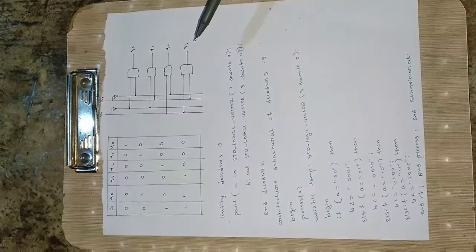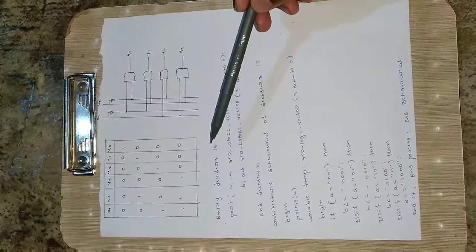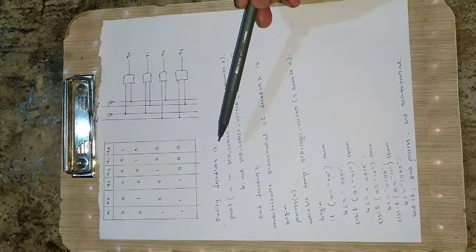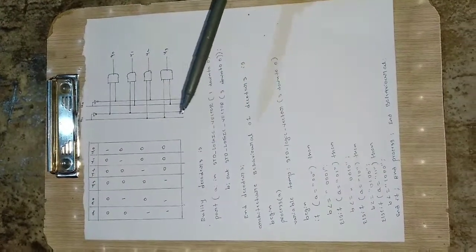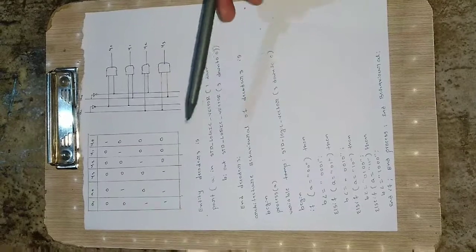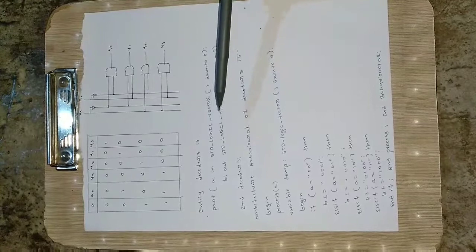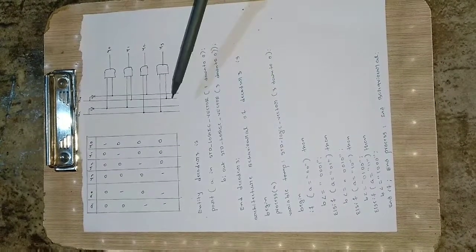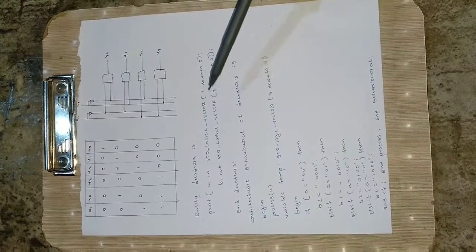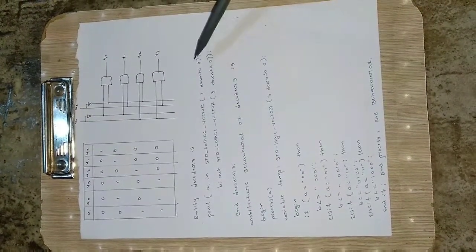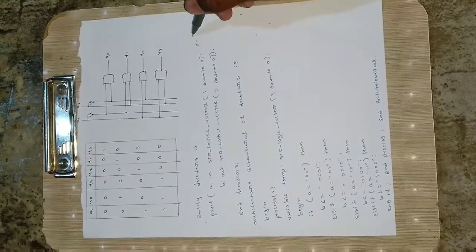So now we will see how to write the code for this one, that is behavioral code. So first I will define the entity. So entity decoder 3 is - I have given this name so you can give anything else if you want, just like a user defined name. Then port: a in standard logic vector 1 down to 0. So a1 and a0 are the two bits which are acting as an input. So I will be taking a 1 down to 0. So this is a vector representation a1 and a0.